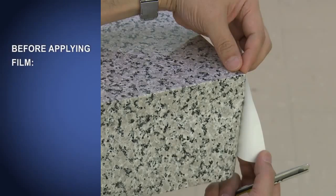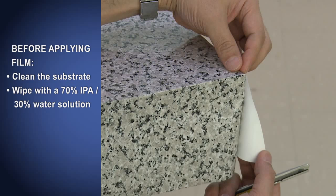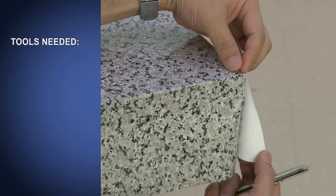Before applying film, always clean the substrate to be sure it is free of dust and contaminants. Wipe with a solution of 70% isopropyl alcohol and 30% water and wipe dry. Be sure your hands are clean and free of dirt and lotions to avoid contaminating the adhesive, and always work on a clean surface with clean tools.